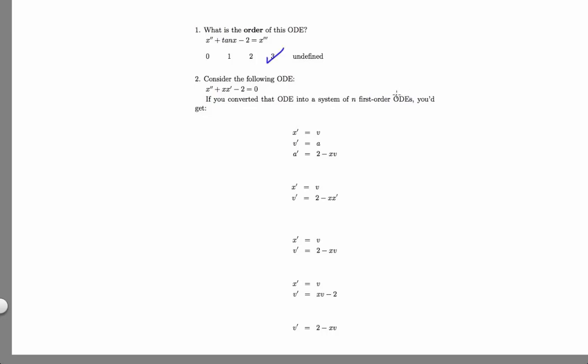The ODE in problem 2 can be converted to a system of n first-order ODEs like this. First, you get the highest order derivative by itself on the left-hand side of the equation. Then, you define helper variables. If you have a second-order ODE, you just need to define one helper variable.